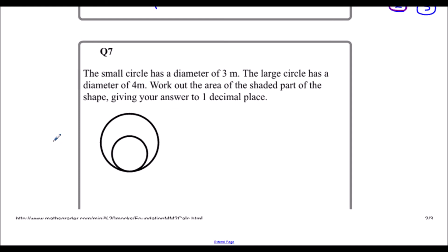Question 7. There's a small circle with a diameter of 3. All the way across the circle is 3. A large circle with a diameter of 4, so all the way across the large circle is 4. Work out the area of the shaded part of the shape, giving your answer to one decimal place. So I'm going to assume the shaded part of the shape is this.